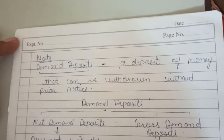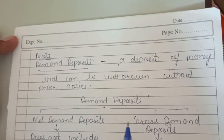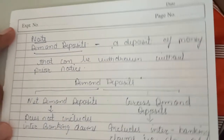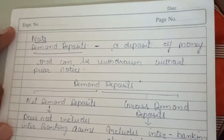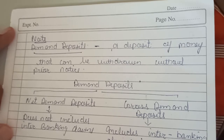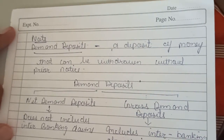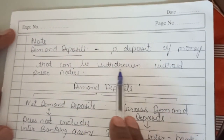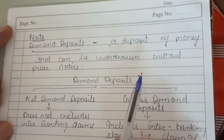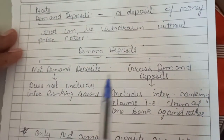First we need to understand what demand deposits are. A demand deposit is a deposit of money that can be withdrawn without prior notice — meaning if someone has deposited money in a bank, they can withdraw it without giving any prior notice. For example, the balance in your savings account or current account — you can withdraw it whenever you want without informing the bank. Demand deposits are those deposits which can be withdrawn anytime.